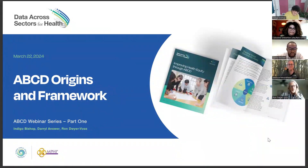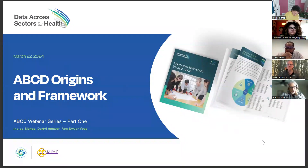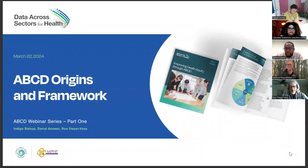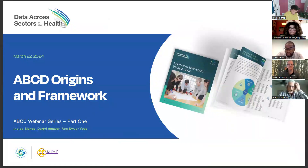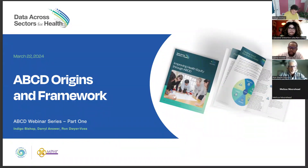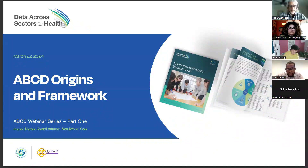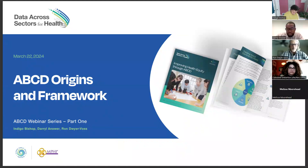I just wanted to give a little bit of background about ABCD, and then Daryl will walk through a particular tool called Asset Mapping, which is sort of the foundational tool for this approach. Then Indigo will introduce a bunch of other tools, as well as an overall look at the way ABCD looks at communities as a setup for conversations about where you all may want to dig deeper. The origins of ABCD — the language came out of the work John McKnight and Jody Kretzman did at Northwestern University, doing research in communities around the United States, looking at places where good things are happening and what led to that.